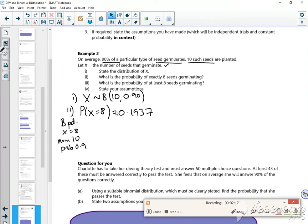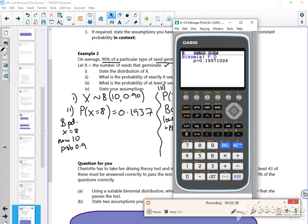Part 3 says what's the probability of at least 8 seeds, so the probability that X is greater than or equal to 8. So this will be BCD, lower 8, upper 10, with all the rest of it in there.